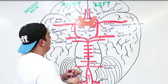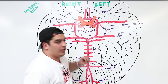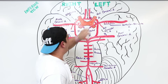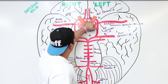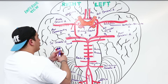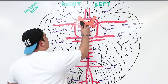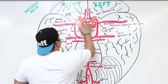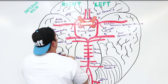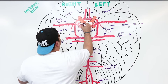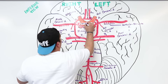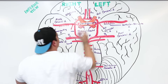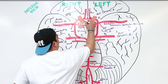Connecting the two anterior cerebral arteries is the anterior communicating artery — a very important and exposed vessel, frequently affected in berry aneurysms. It sits near the optic chiasm.